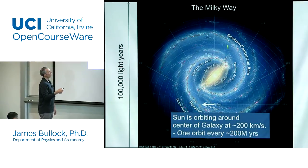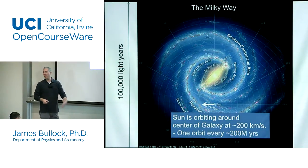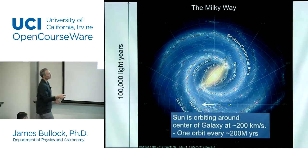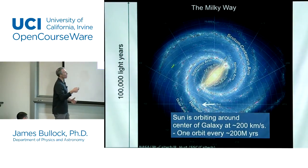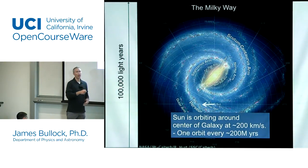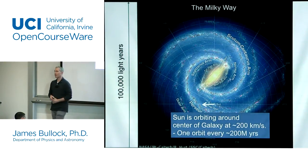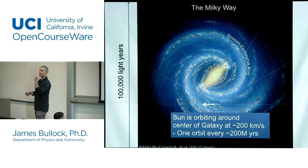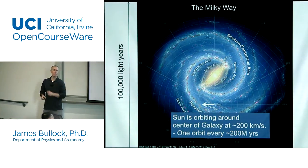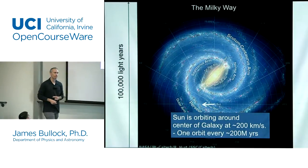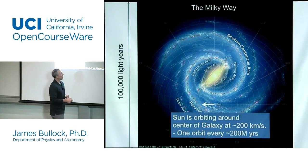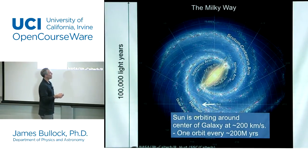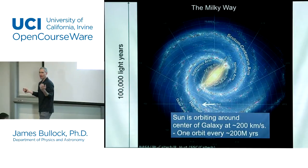Even though the sun is going really fast — 200 kilometers a second — it actually takes 200 million years for it to go around the galaxy once. So every 200 million years, we've orbited the galaxy one time. The reason why it takes so long is because it's very big.